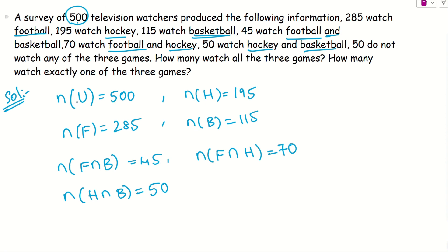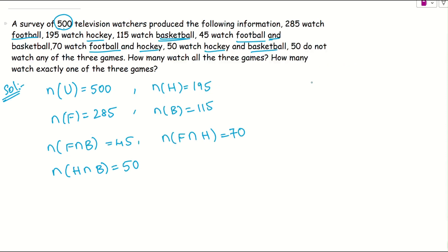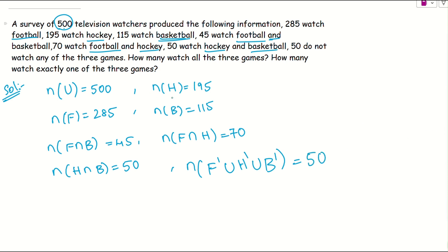50 do not watch any of the three games. If you check the playlist, I've explained when to use complement, intersection, union and all those formulas. The 50 who don't watch any of the three games means F complement union H complement union B complement equals 50. This is the set of people outside F∪H∪B.